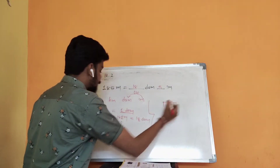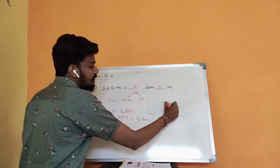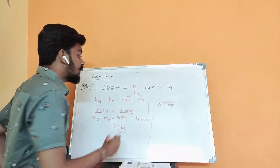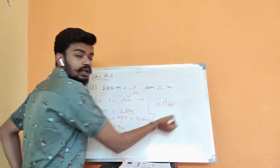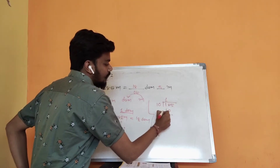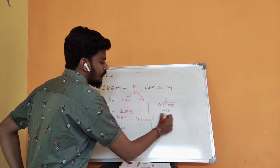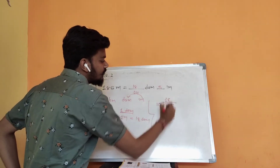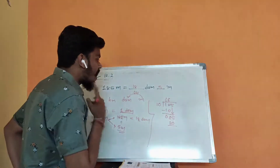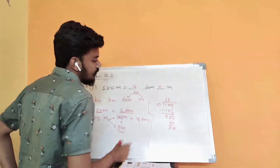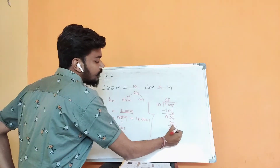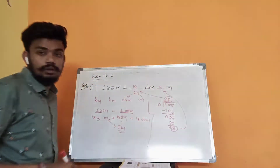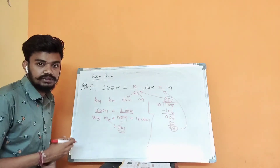Now for the division method: 185 divided by 10. Doing the long division — 10 goes into 18 once with remainder 8, then we bring down 5, giving remainder 5. So the quotient is 18 and the remainder is 5. That means 18 decameters and 5 meters — the same answer as our regular method. Either method gives the same answer.